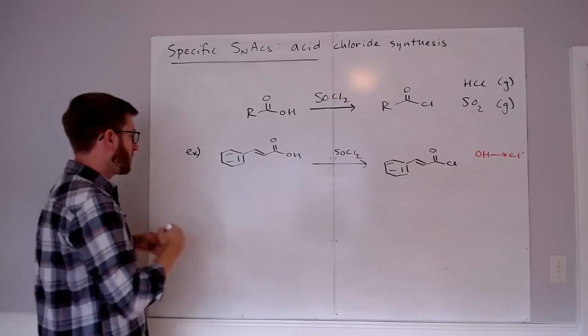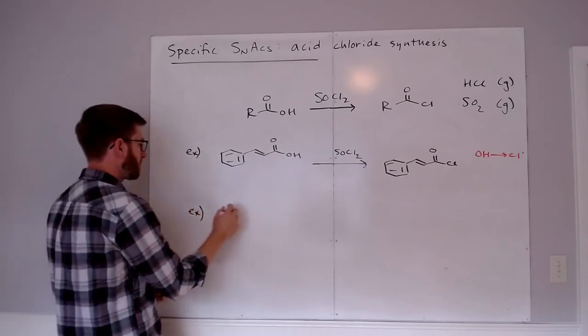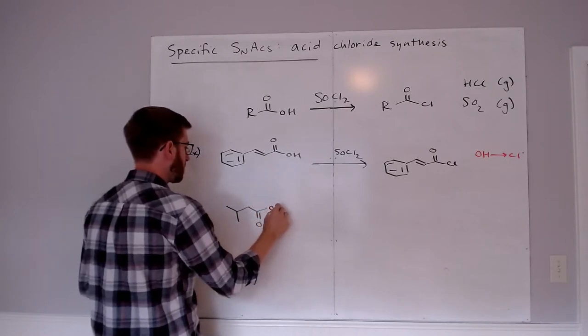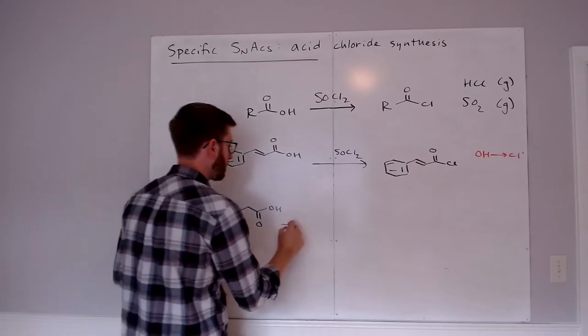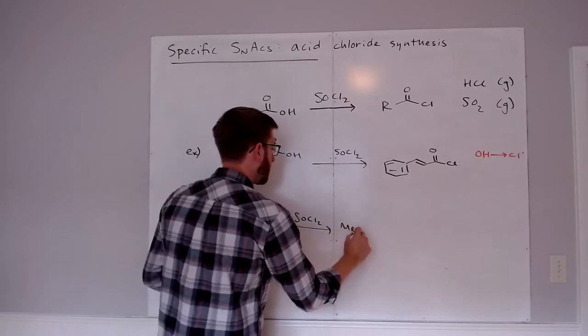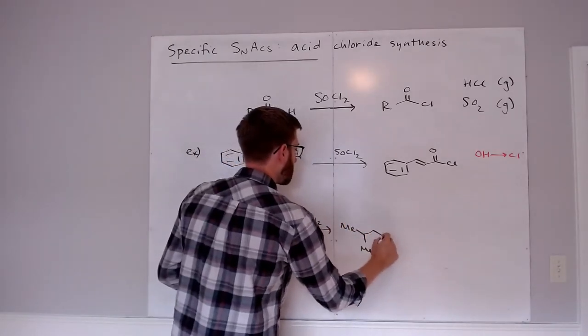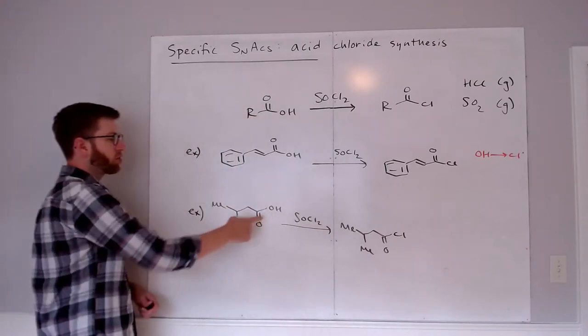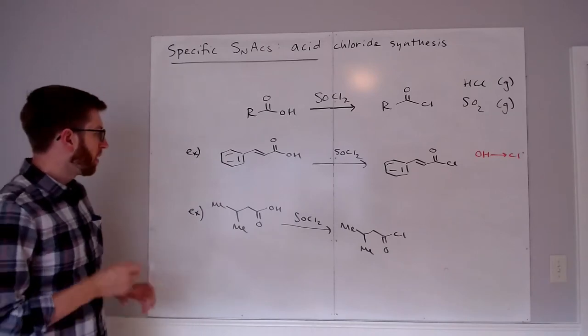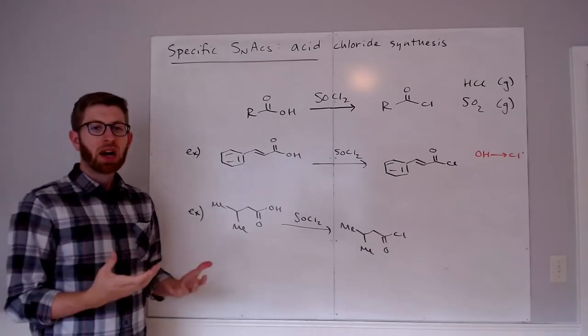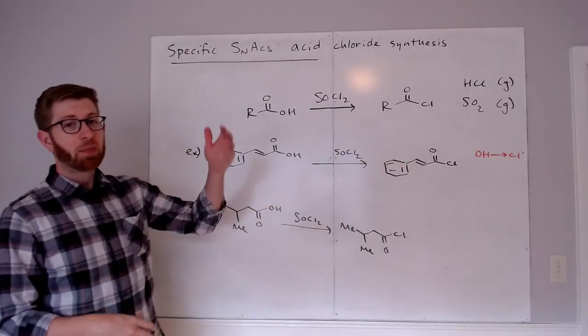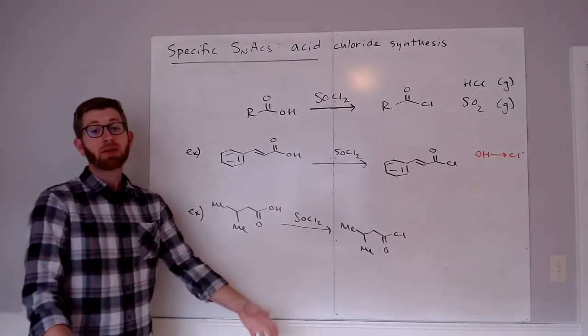You could imagine other types of cases as well. We could take a different carboxylic acid that looks like this, treat it with SOCl2. And the only change we would expect to see is exchange of the OH group of the carboxylic acid into the chlorine of the acid chloride functional group. So this is a really handy method to get to a highly reactive carboxylic acid derivative.